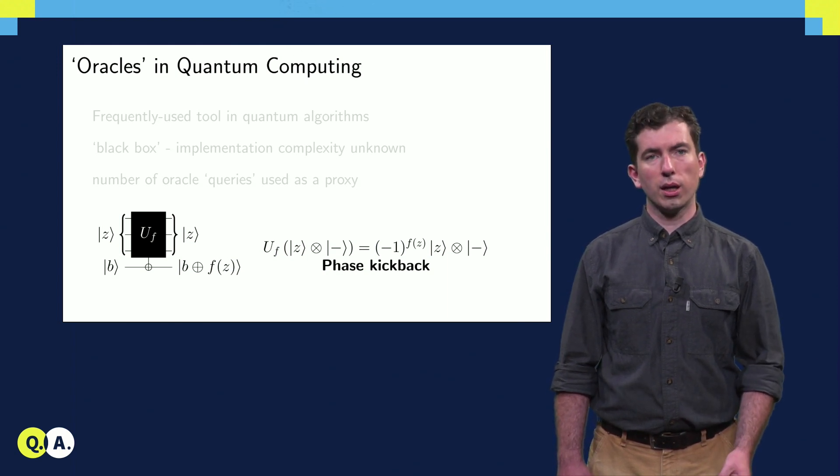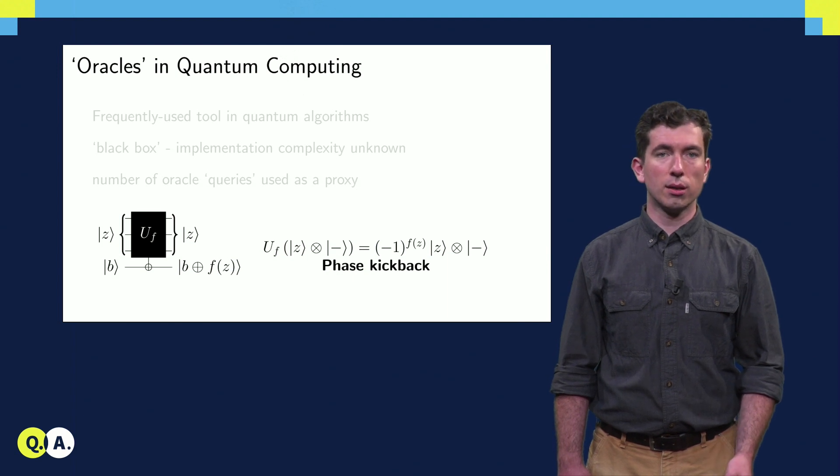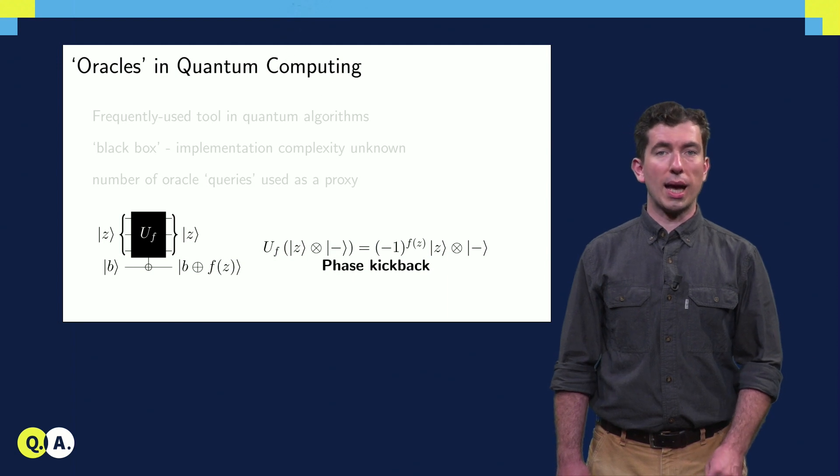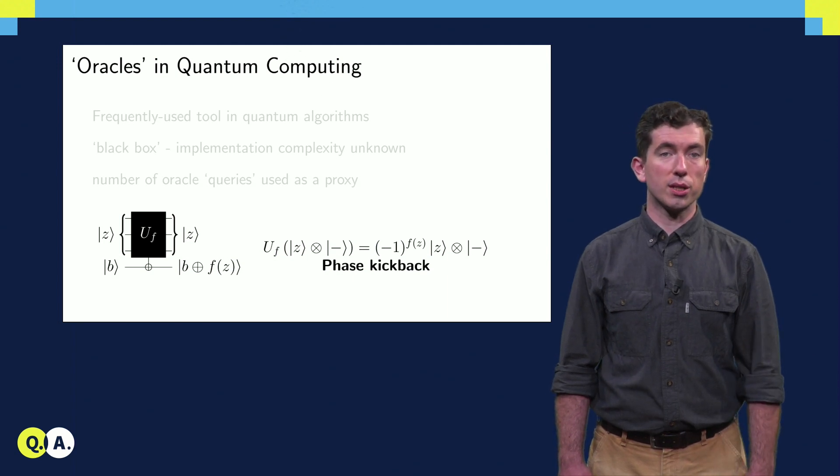Already we can see that if we input a minus state on the ancilla, we can obtain what I'll call UF, which maps W to minus W, and acts as the identity on all other states in the Z basis.